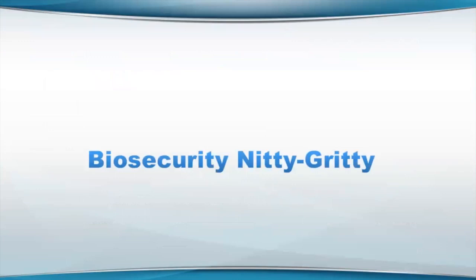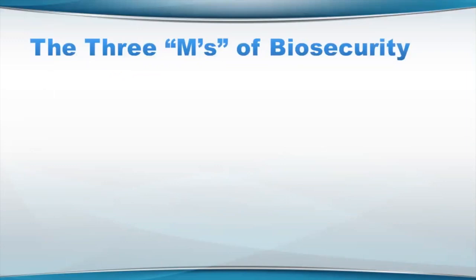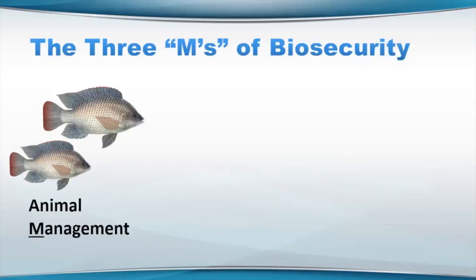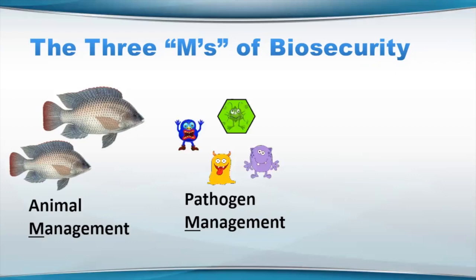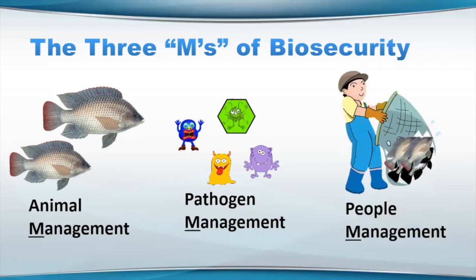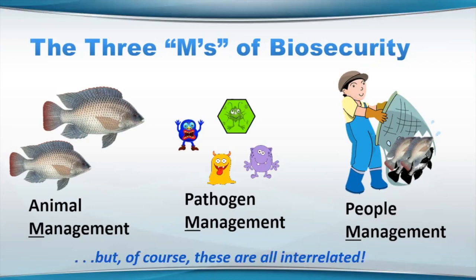So let's go into the nitty gritty of biosecurity now. I like to consider three basic M's of biosecurity. So you have animal management — I'm just using tilapia here as an example, but it could be whatever animal you are raising. Pathogen management, because there are so many different species and types of pathogens. And then people management, which is difficult, but once the folks on your facility really understand what you're trying to do, it makes things a lot easier. It is a really important part of biosecurity — you really need to make sure that the people are engaged, whether it's your staff or visitors.